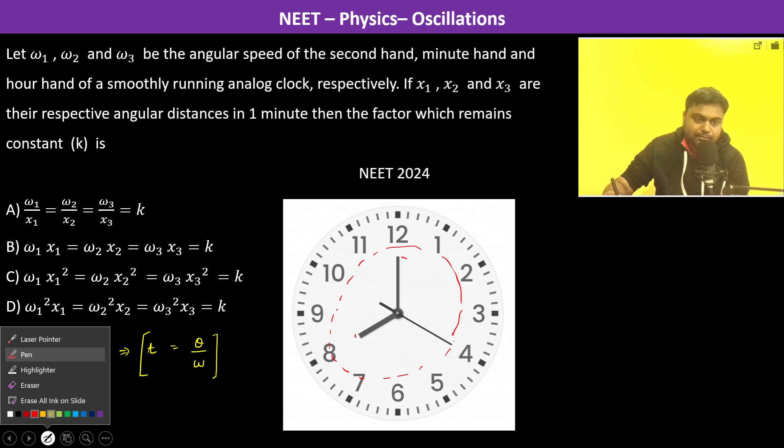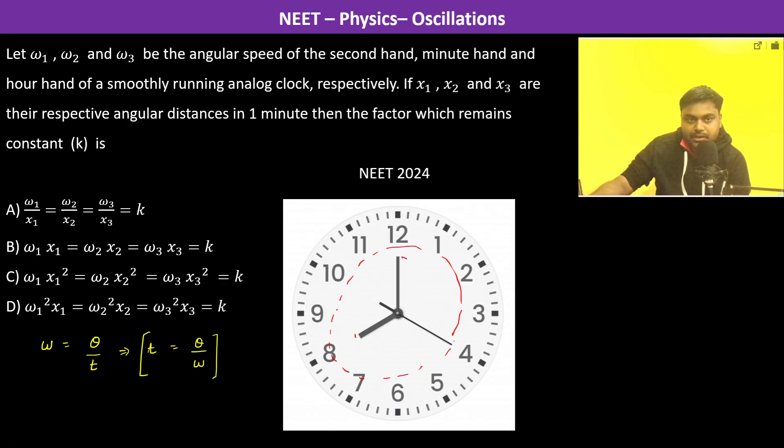Since the time taken is same for all, we can write theta1/omega1 is equal to theta2/omega2 is equal to theta3/omega3, which is going to be 1 minute or 60 seconds.